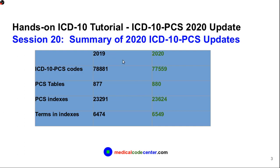First, the total number of ICD-10 PCS codes has changed. In 2019, we had 78,881 codes. But in 2020, we actually have fewer codes. This is rare — usually every year you have more codes than the year before. But this year, we have around 1,322 fewer codes than the year before. So this is good news because it will make coding simpler.